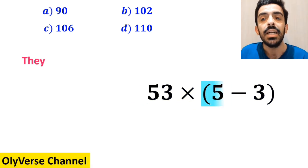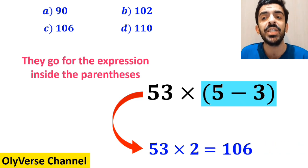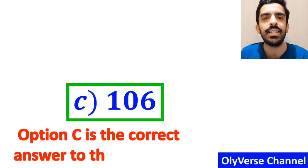In the final step, they go for the expression inside the parenthesis and replace it with 53 times 2, which ultimately gives them the answer 106. And without any hesitation, they quickly say that option C is the correct answer to this question.